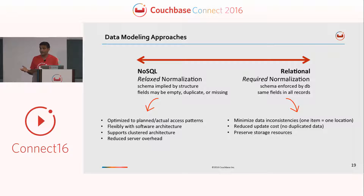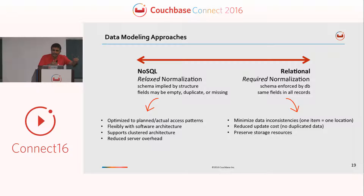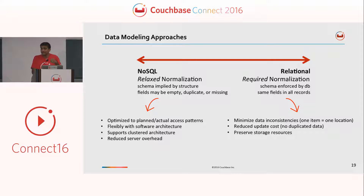If you are from the relational world, you must have heard about normalization — we normalize and normalize and normalize. Why do we do that? It's mostly for consistency and to avoid duplication of the data, minimum data inconsistencies, and reduced update costs, which means no duplicate data and preserving storage resources. But when we talk about NoSQL databases or Couchbase, we talk about relaxed normalization. It's okay to repeat the data. You have to make a choice: do I need direct references or can I embed the data? The idea is I need to increase the speed and flexibility to scale my entire model.